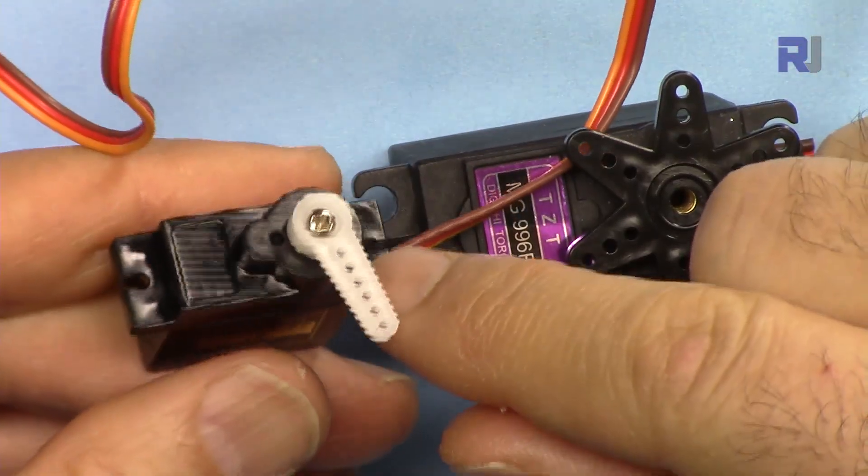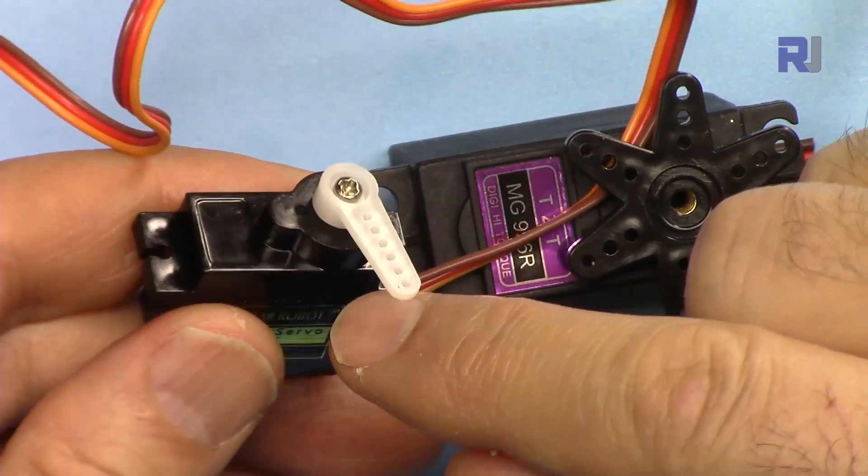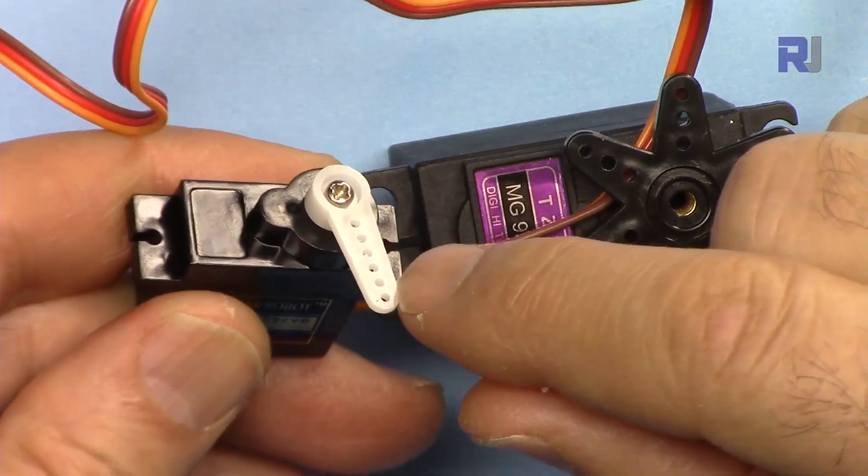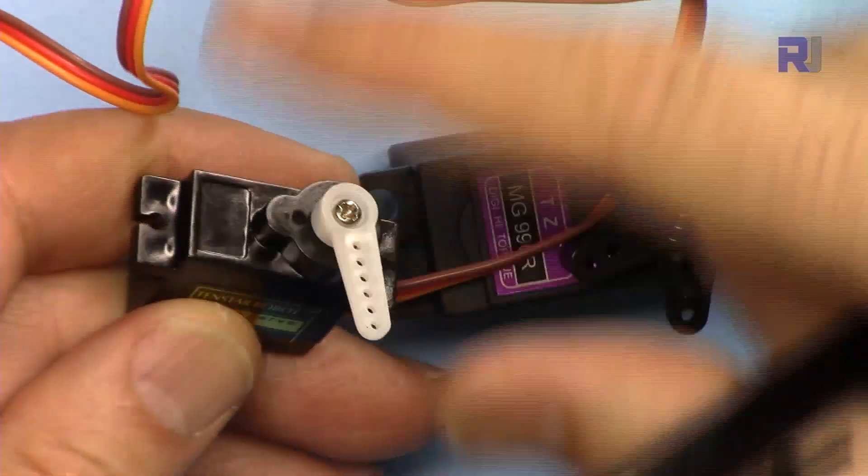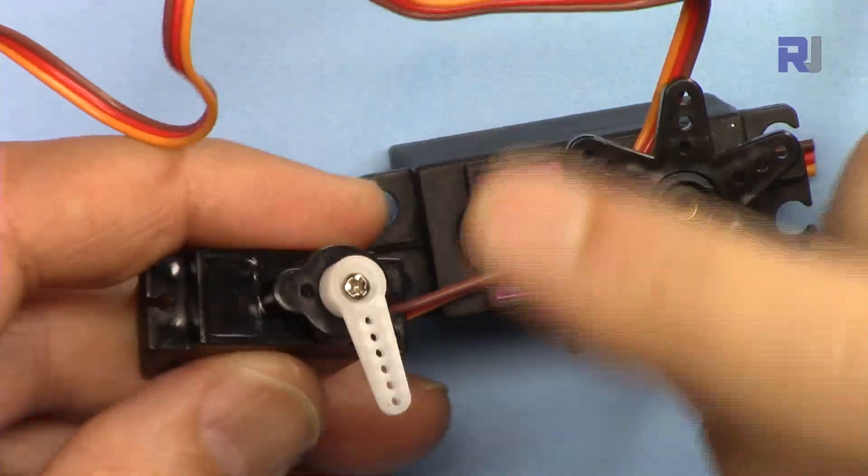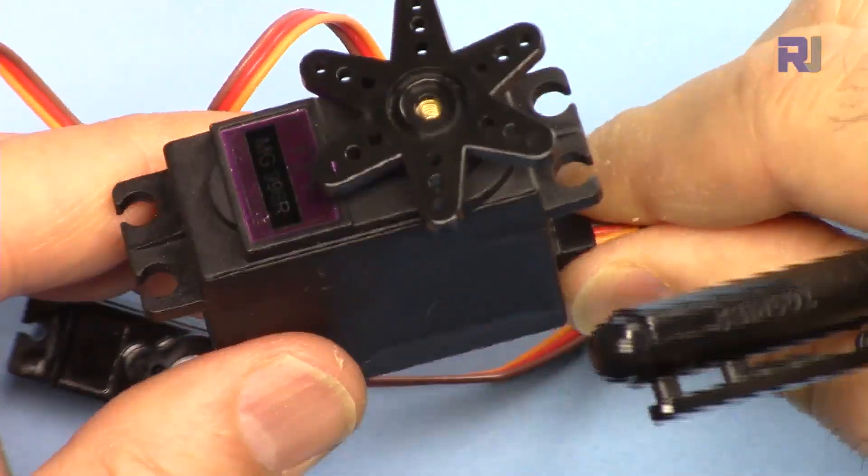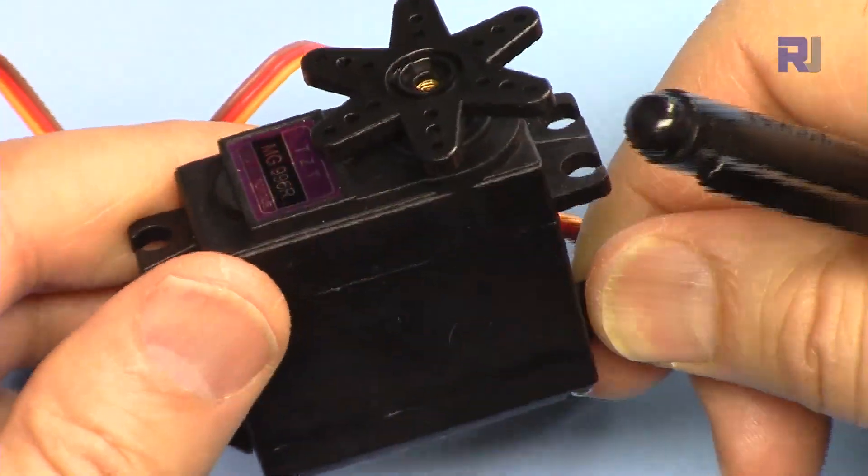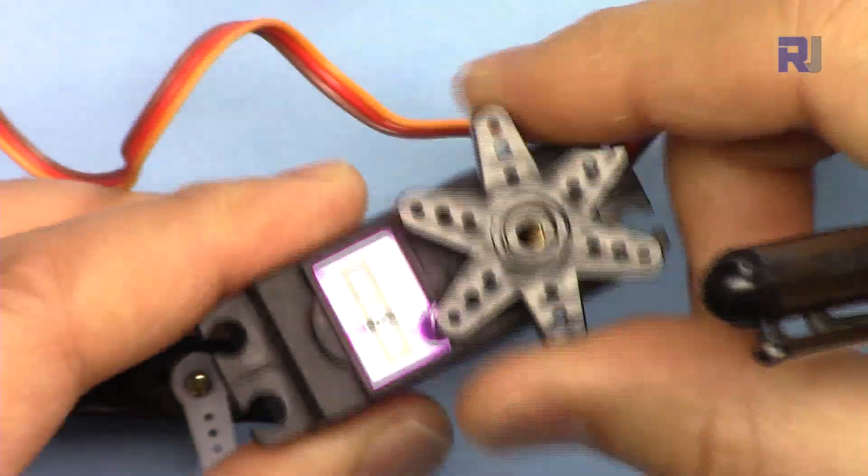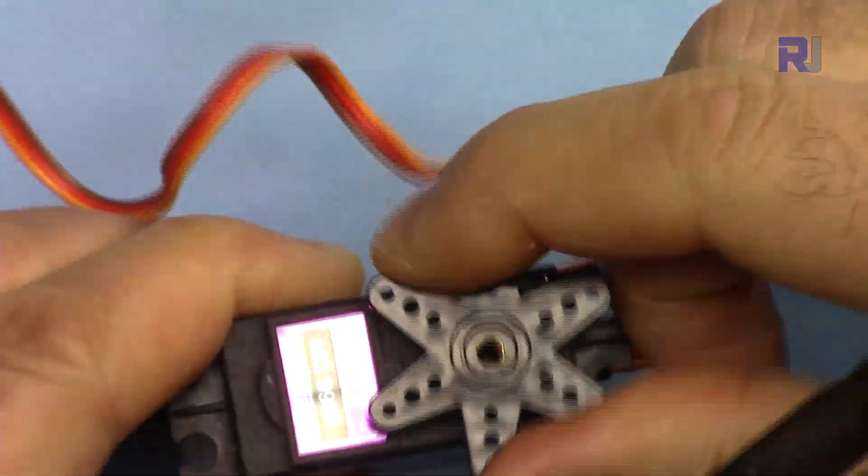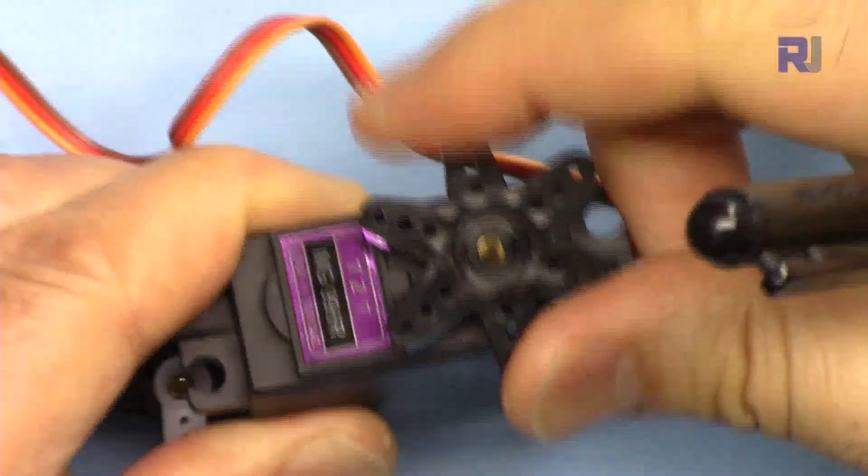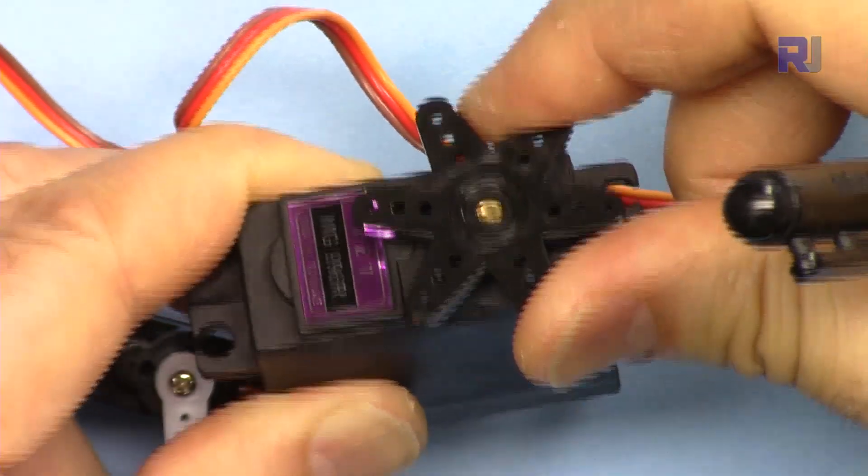There are also other types of servo motors. For example, there's something called continuous servo which I have the link below. It will rotate 360 degrees. These are the most common ones, and also you might get this type of servo motor which is very heavy with high torque. It is the same way—it can go 0 to 180 degrees and it will stop.